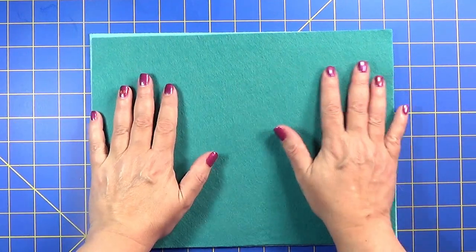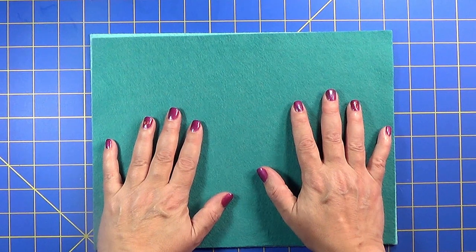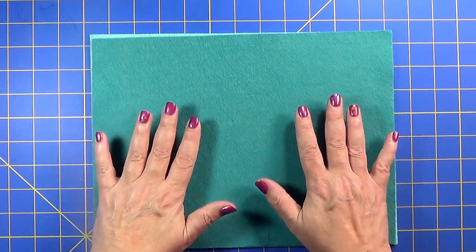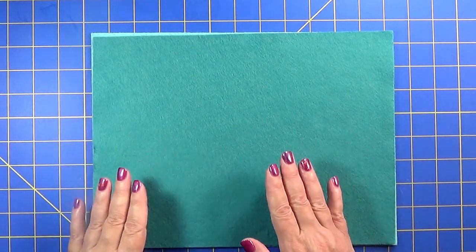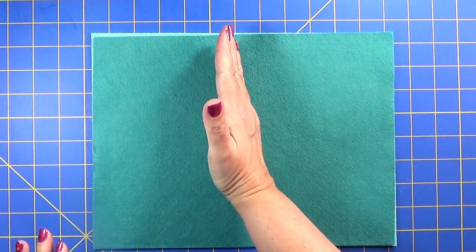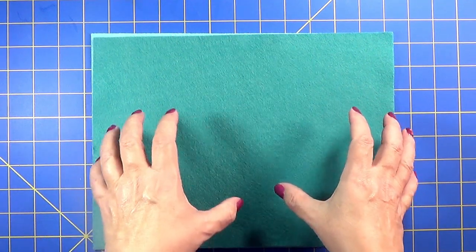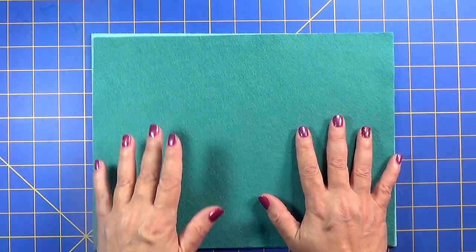Now felt sheets come, generally speaking, in nine by twelve pieces, so it makes it very easy. My outside dimensions are six by nine, so if you cut the felt sheet in half, then you have plenty of pieces to make your cover.